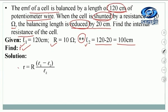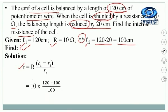The formula is r equal to R into (L1 minus L2) upon L2. Capital R is 10 ohm, L1 is 120 centimeter, L2 is 100 centimeter. Substituting the values, we get small r, the internal resistance, equal to 2 ohm. It is very simple. You just need to know what 'reduced' means and what 'shunted' means.